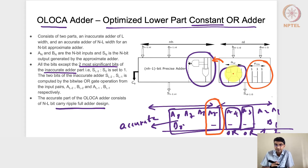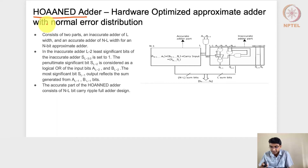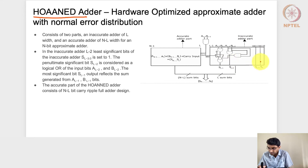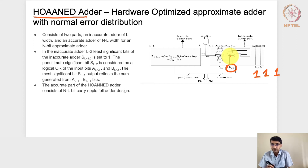The next approximate adder is HOANED — Hardware Optimized Approximate Adder with Normal Error Distribution. Like OLOCA, it is divided into an accurate portion and an inaccurate portion. In the inaccurate part, except for two bits, all other bits are considered as one. The second most significant bit in the inaccurate portion comes from an OR gate — very similar to the OLOCA adder.